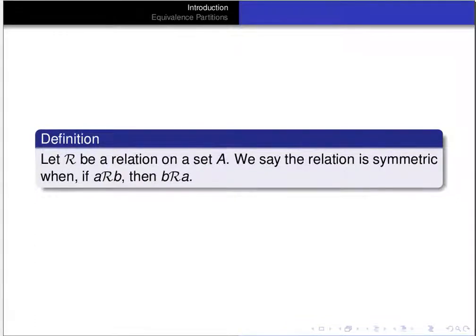A relation is symmetric if whenever a is related to b, then b is related to a. And a relation is transitive if whenever a is related to b and b is related to c, then a is related to c.